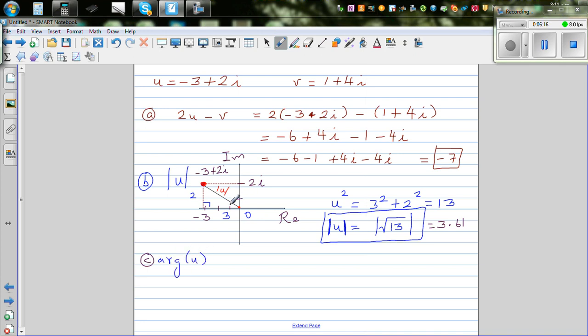Argument of u is this angle. To find argument of u, let's call this theta. Argument of u would be 180 minus theta, because this angle is 180, and if you take away theta, you get this angle.